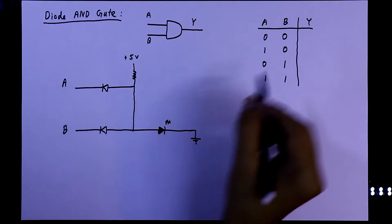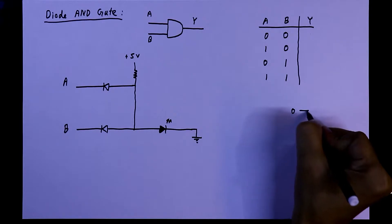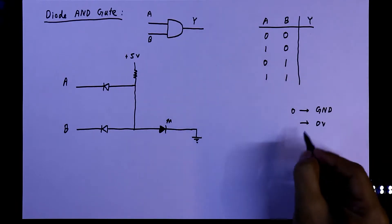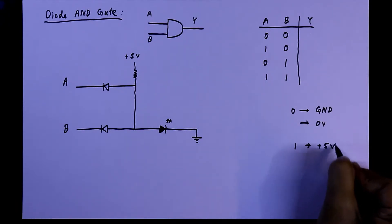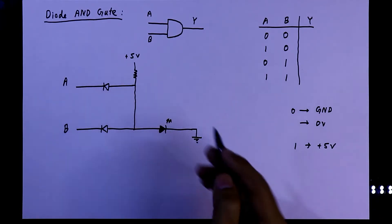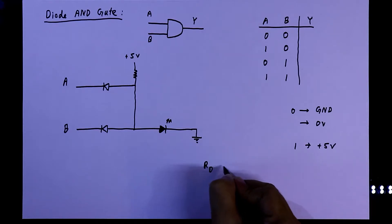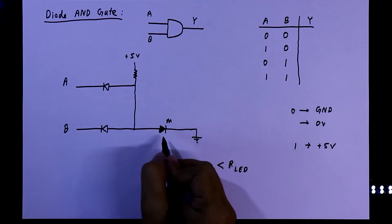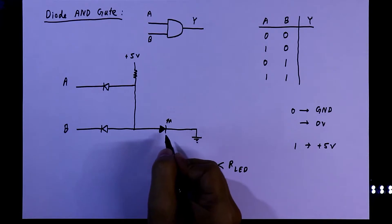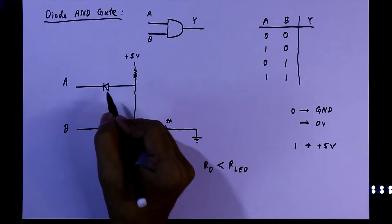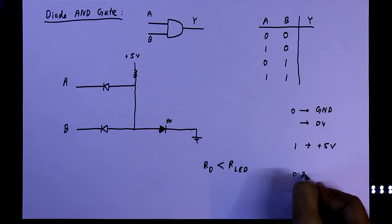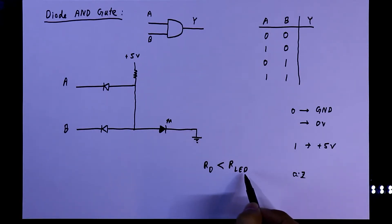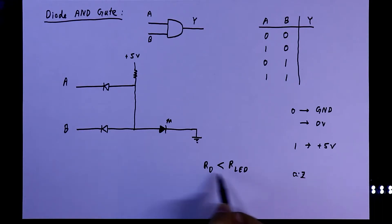We will analyze the circuit to find the output. Zero means the voltage level is equivalent to ground or 0 volts, and one means it is equivalent to positive 5 volts. The internal resistance of a diode is less than the internal resistance of an LED, because the voltage drop at the LED is about 1.8 volts, while at the silicon diode it is 0.7 volts. Low voltage drop means low resistance; high voltage drop means high resistance.